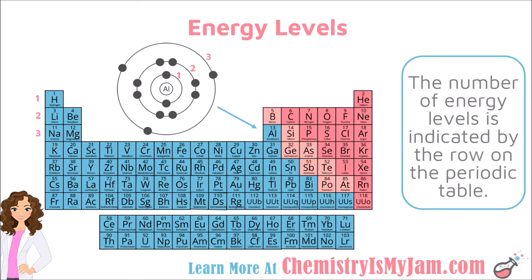First of all, the energy level. We saw these when we talked about Bohr models — you have different energy levels where electrons are located. The number of energy levels is indicated by the row down on the periodic table. The Bohr model for aluminum shows that there are three energy levels for aluminum, and aluminum is located on the third row down on the periodic table. So your row down indicates the number of energy levels present.